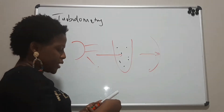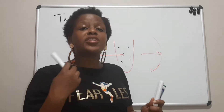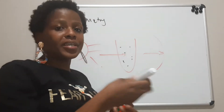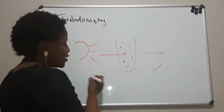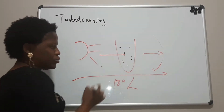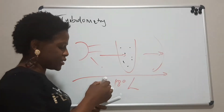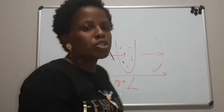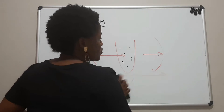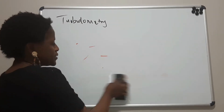Turbidometry is defined as the measurement of light transmitted by particles in a suspension at a 180-degree angle. As you can see, this is a straight line at 180 degrees. That's how you can define turbidometry in simple terms.